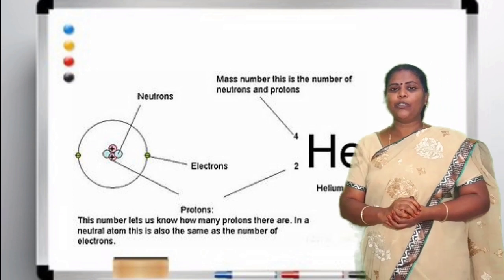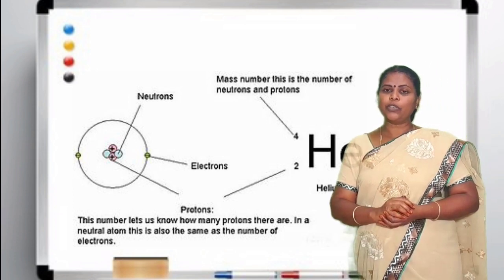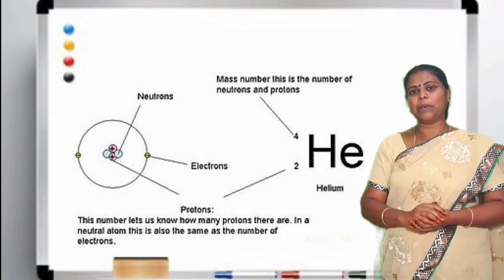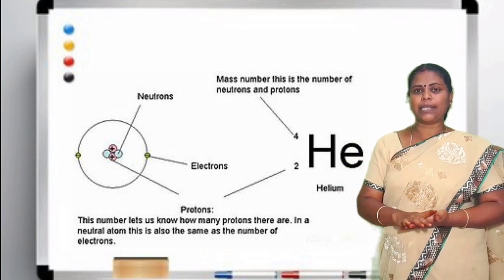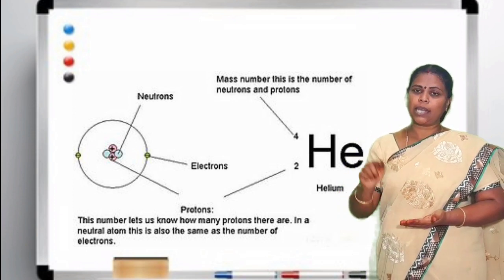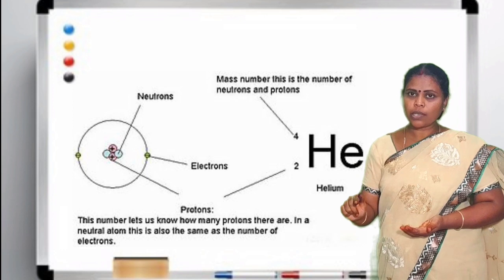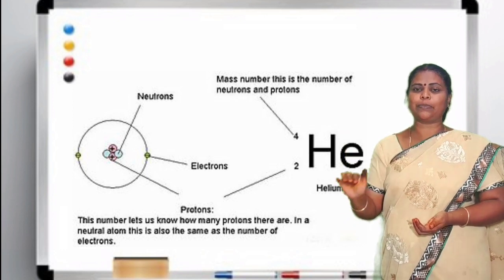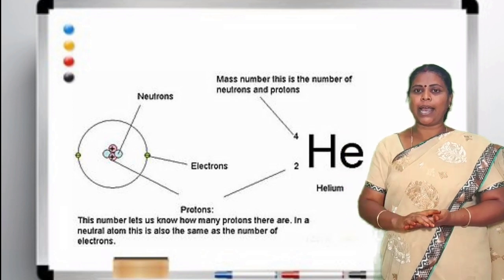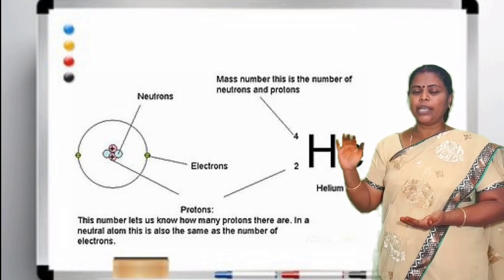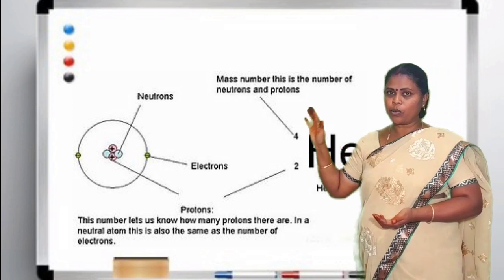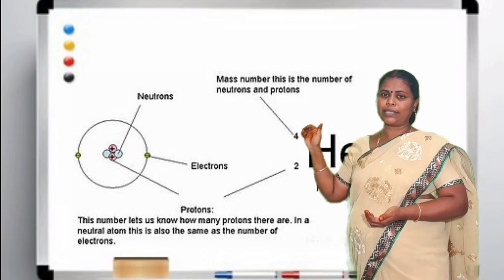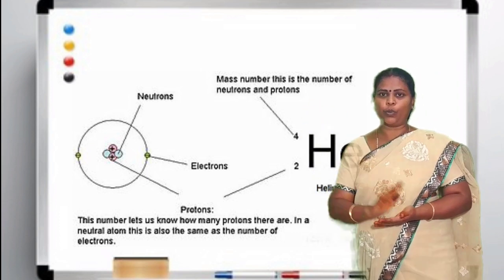The number of neutrons will vary. What is mass number? Mass number is nothing but the number of protons plus the number of neutrons which is present in an atom. The protons and neutrons are both present in the nucleus.